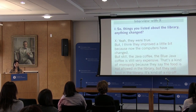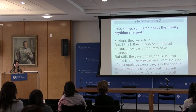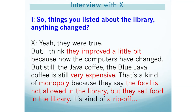The teacher interviewed X after the project. The interviewer asked: 'Things you listed about the library — anything changed?' X said: 'Yeah, they were true. I think they improved a little because now the computers have changed. But still, the Blue Java coffee is still very expensive. That's kind of a monopoly because they say food is not allowed in the library, but they sell food in the library. It's kind of a rip off.'